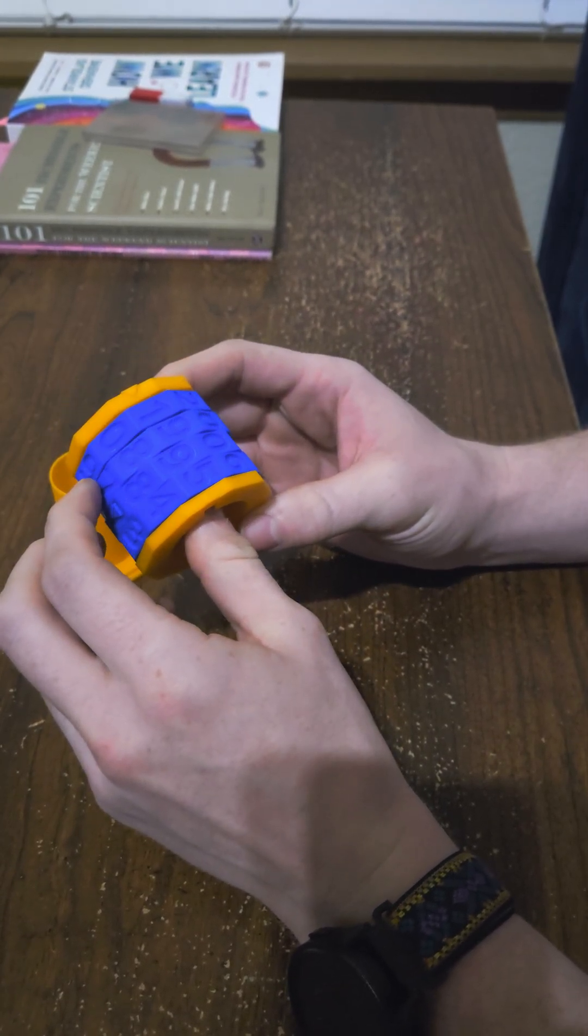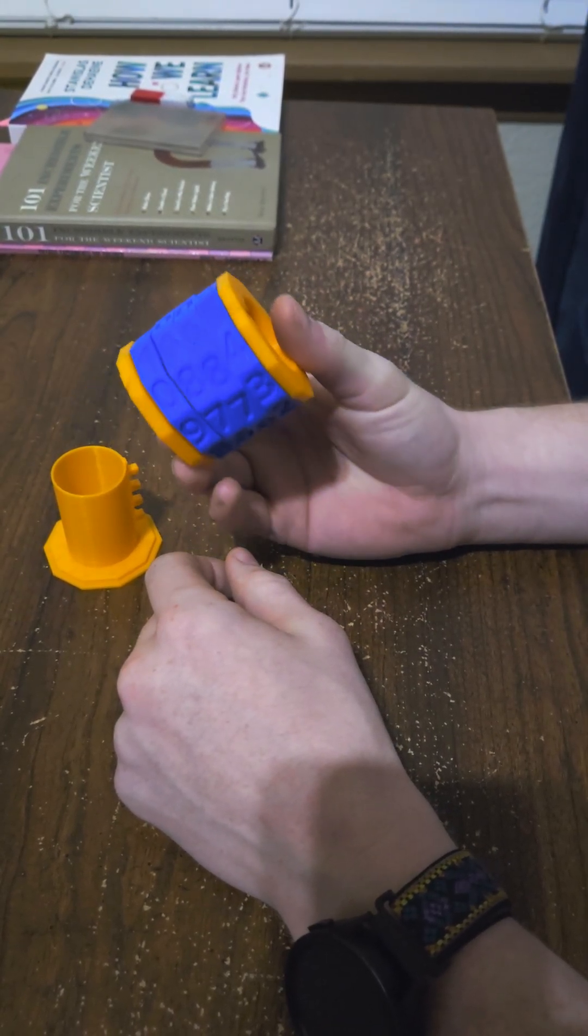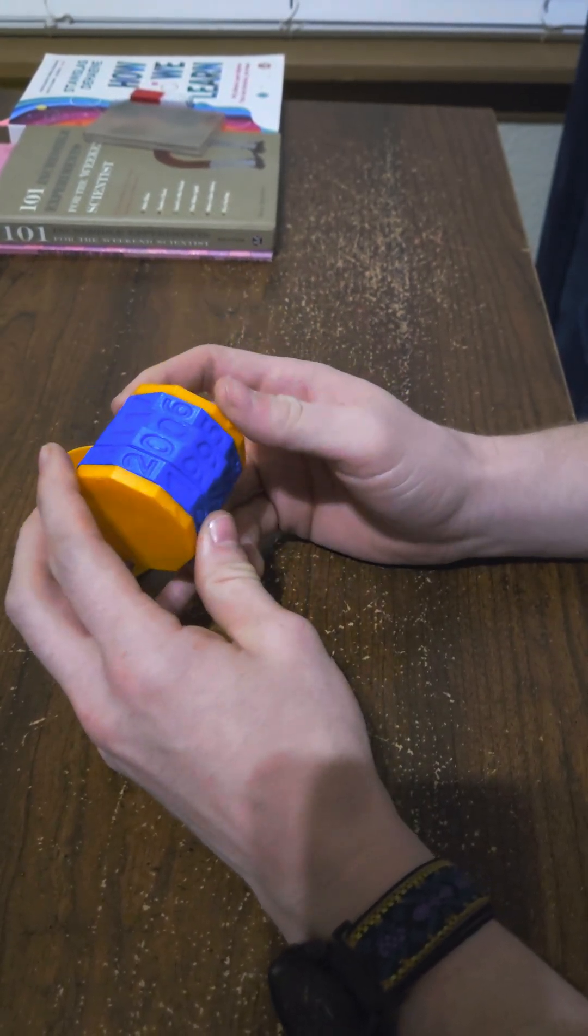One for the actual locking ring, and then one for the numbers so you can choose your own answer or code to get in.